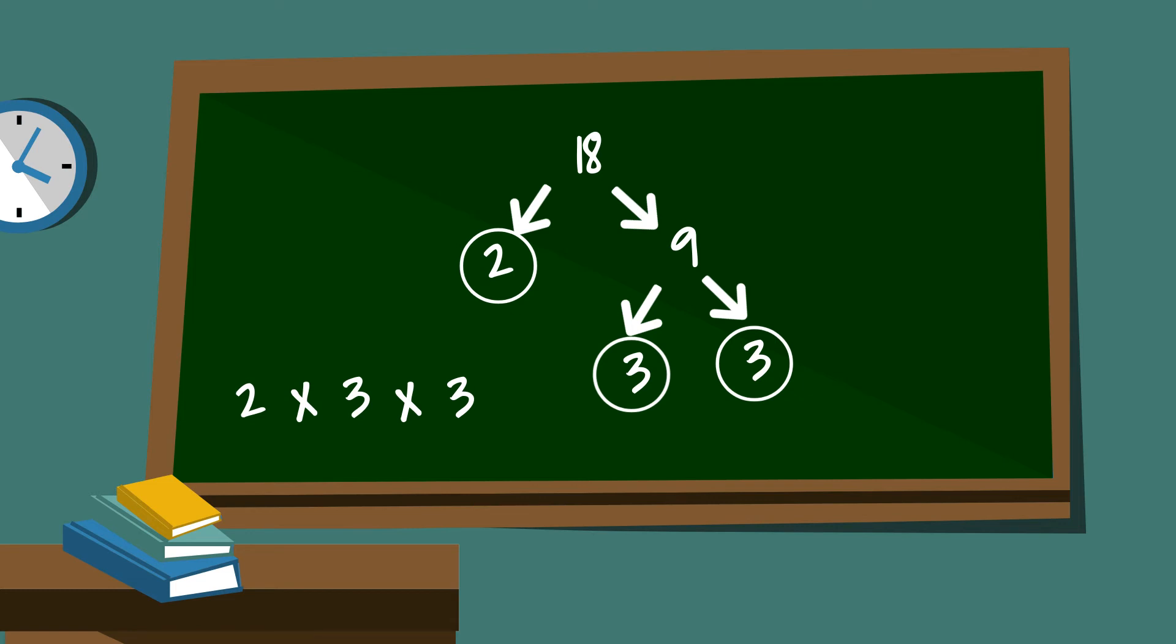Now let's work on 90. 90 is divisible by 2. 2 times 45 is 90. I will circle the 2 because it is prime. Now 45 is divisible by 3.